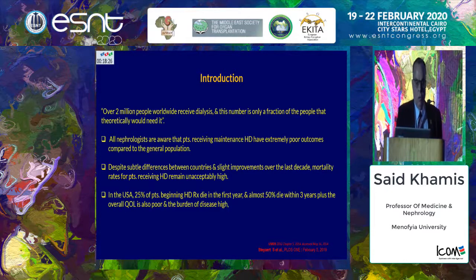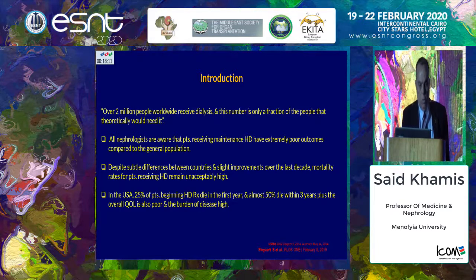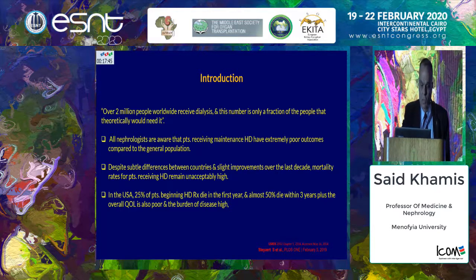As we all know, over 2 million people worldwide receive dialysis, and this number is only a fraction of those who theoretically need it. Patients receiving regular hemodialysis have extremely poor outcomes compared to the general population. Despite slight improvement over the last decade in mortality and morbidity, outcomes remain unacceptably high. Almost one quarter of patients beginning hemodialysis die in the first year, and almost 50% die within three years. The overall quality of life is also poor and the burden of disease is very high.